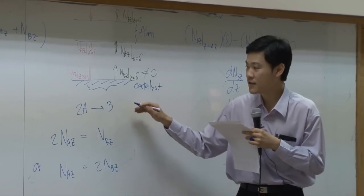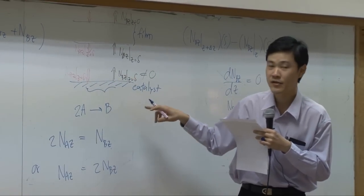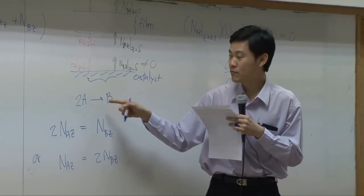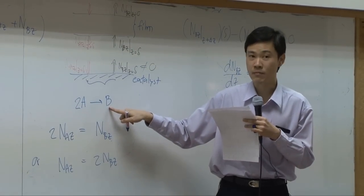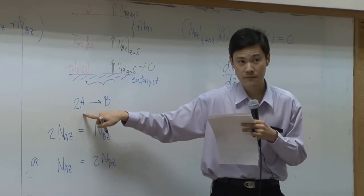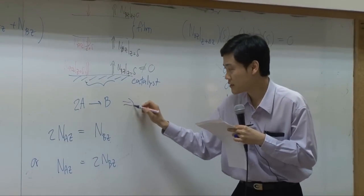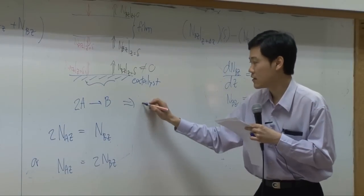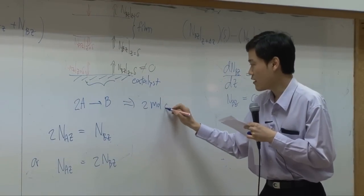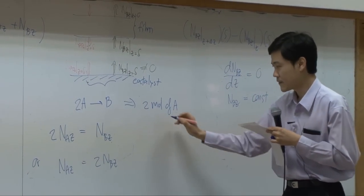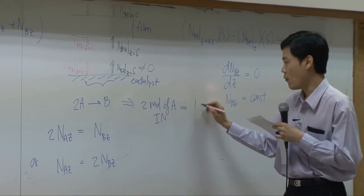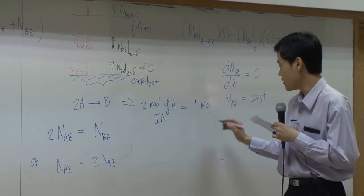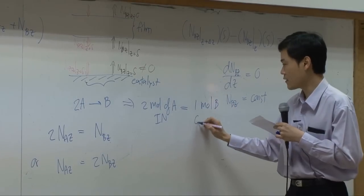In order to make sure which one is correct, you need to interpret this correlation. In order to produce one mole of B, you need to supply two moles of A, right? So this reaction means two moles of A going in, you get one mole of B going out.